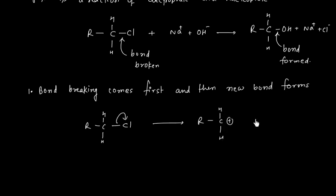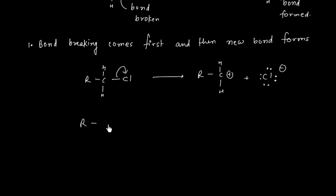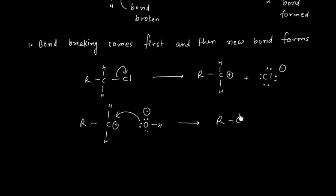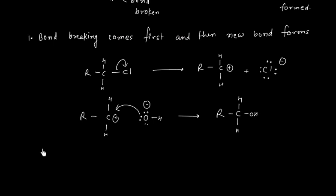In this first possibility, carbon will have a positive charge and at the same time chlorine will have a negative charge. In the next step, a bond between carbon and oxygen can be formed. So this is step one and this is step two — if bond breaking comes first, it is a two-step process.